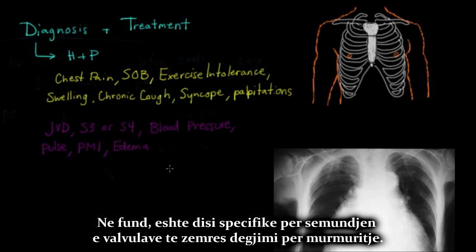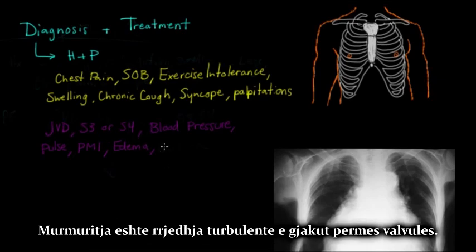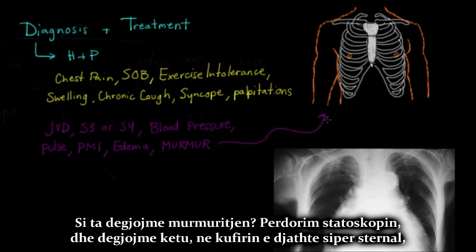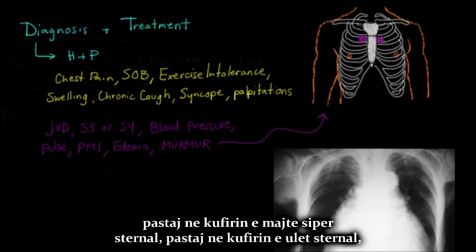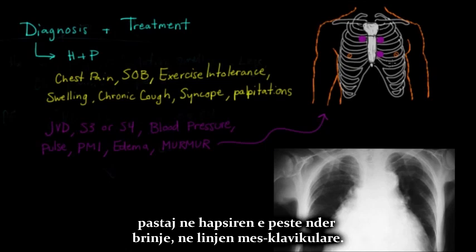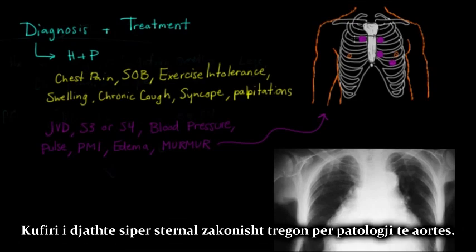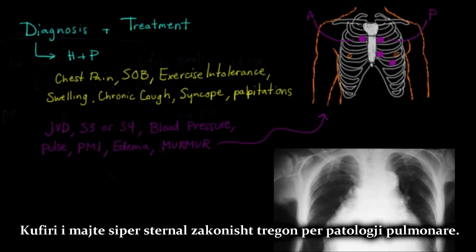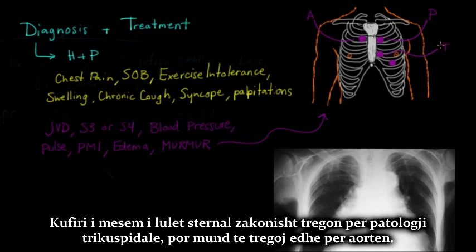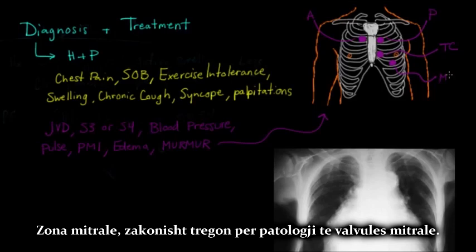One finding that is somewhat specific to valvular heart disease is listening for a murmur, which is simply turbulent blood flow through a valve. Using a stethoscope, you listen at the right upper sternal border, the left upper sternal border, the left lower sternal border, the left mid-to-lower sternal border, and then in the fifth intercostal space in the mid-clavicular line — also called the apical area. The right upper sternal border is usually indicative of aortic pathology, the left upper sternal border of pulmonic pathology, the mid-to-lower left sternal border of tricuspid but can be aortic, and the apex or mitral area of mitral valve pathology.